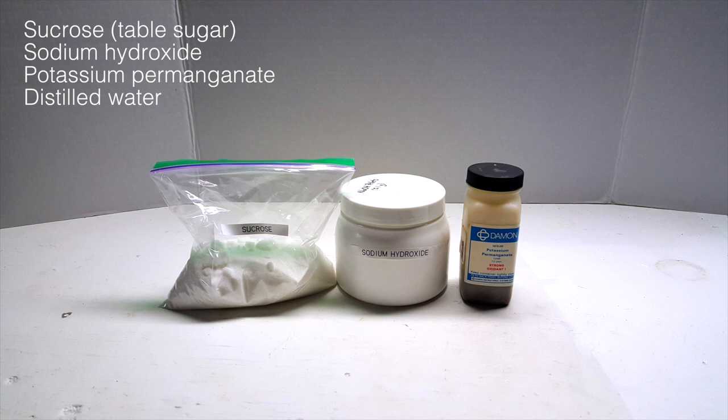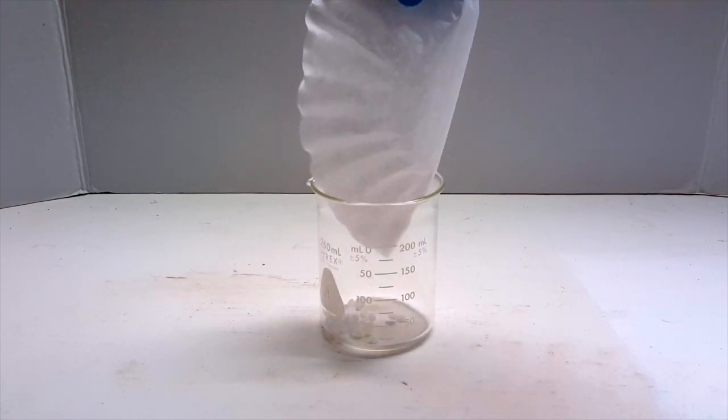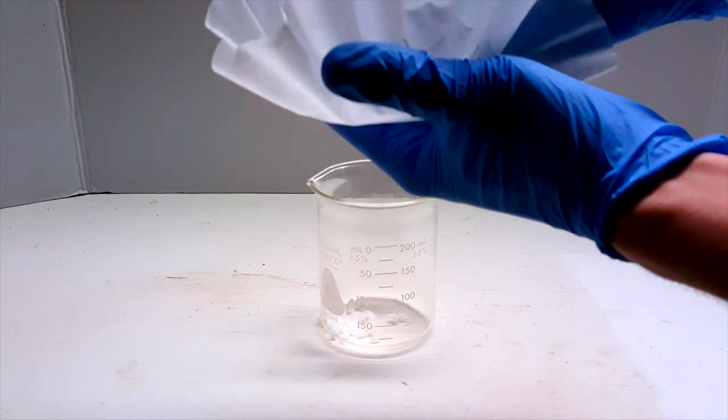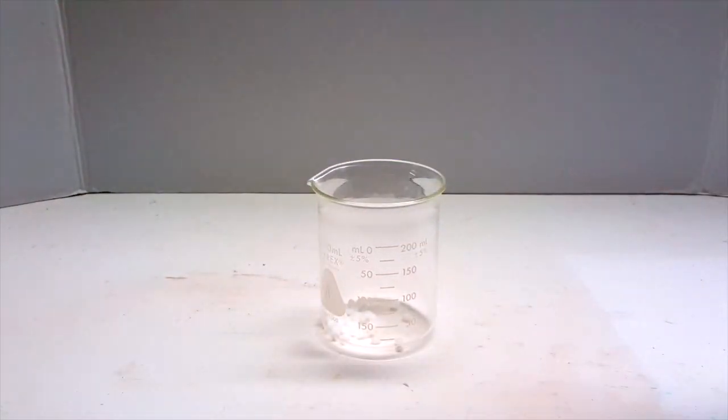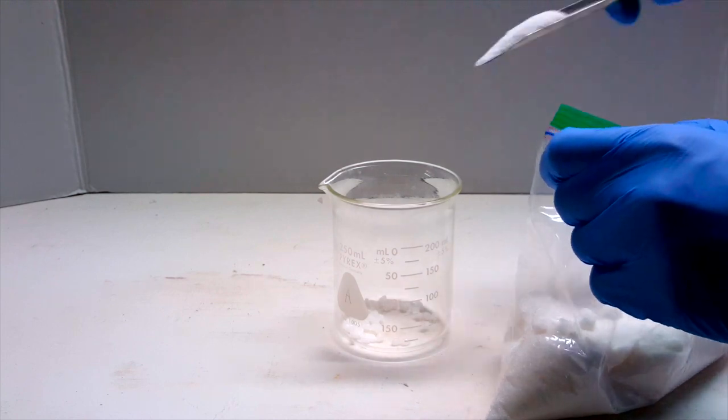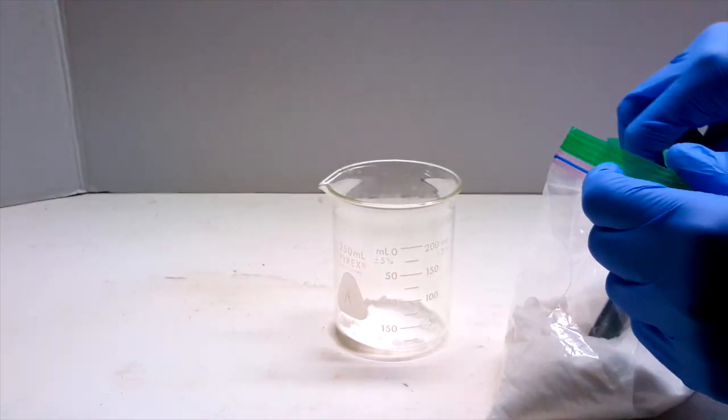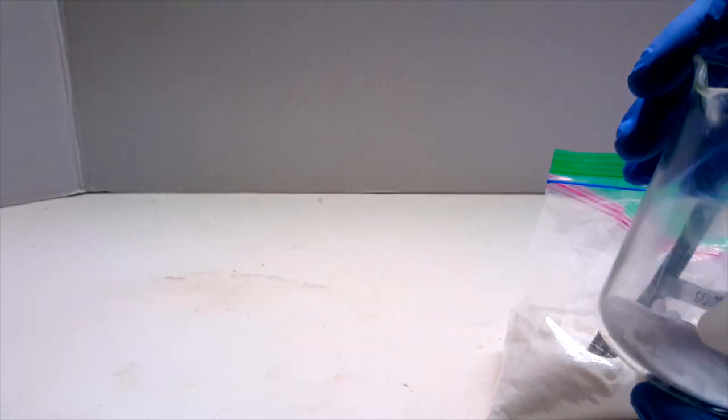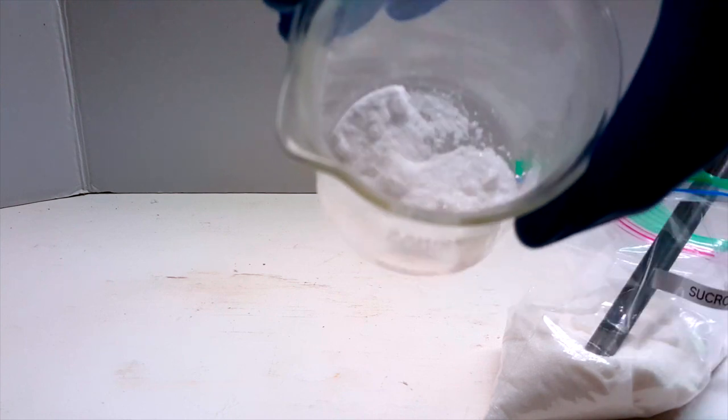The proportions of chemicals used are pretty arbitrary, and the concentrations will only really change the rate of the reaction. For the first run, I added 4 grams of sodium hydroxide to a beaker labeled A. Then I added enough sucrose to entirely cover the sodium hydroxide pellets. Again, an exact amount is really not necessary.